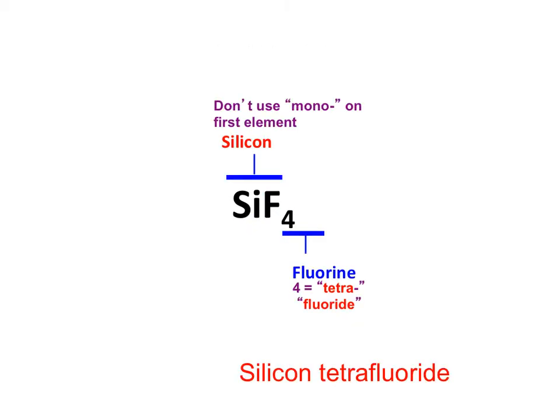So our list of prefixes says that when you have a one as a subscript, it is mono. But we're never going to use the prefix mono in the first position. So we're just going to put the regular name, which is silicon, for the first non-metal.